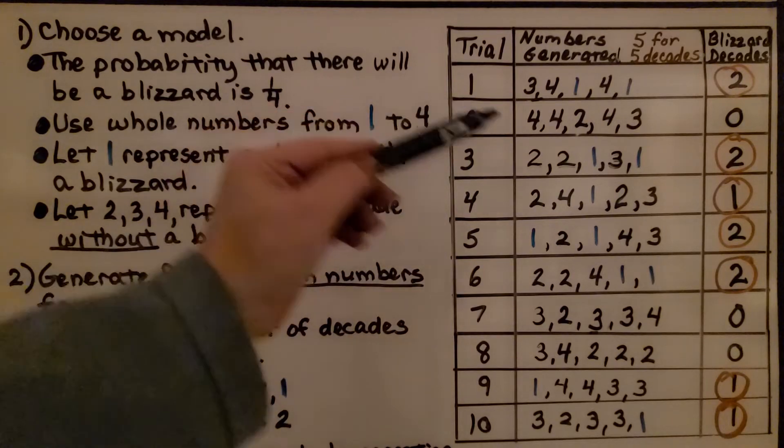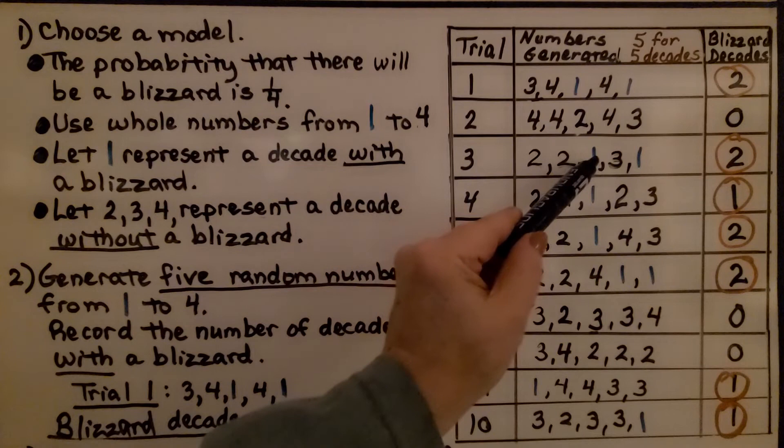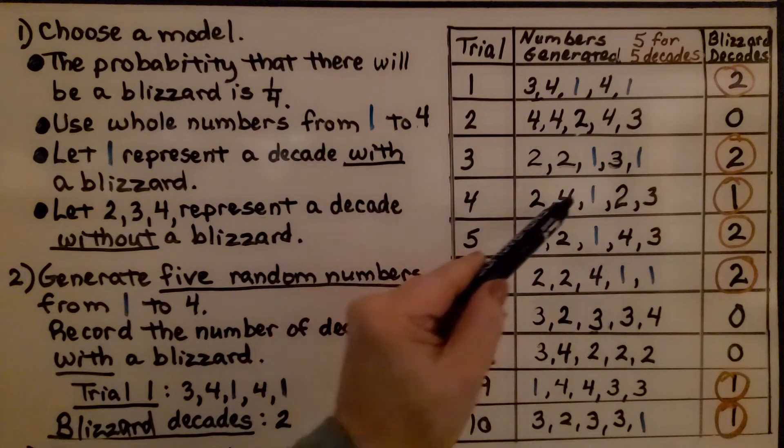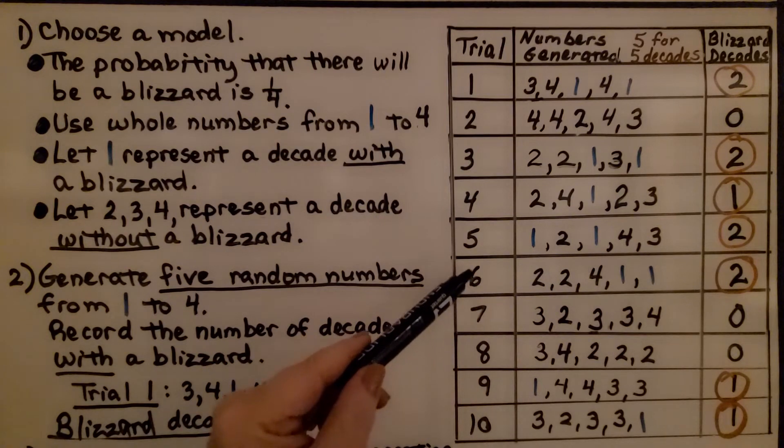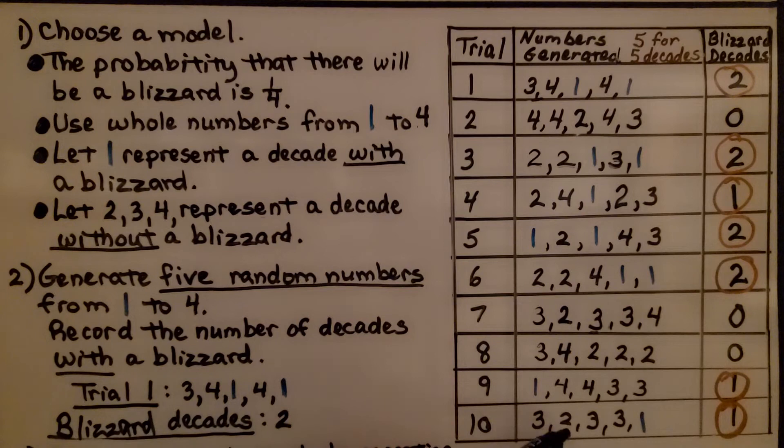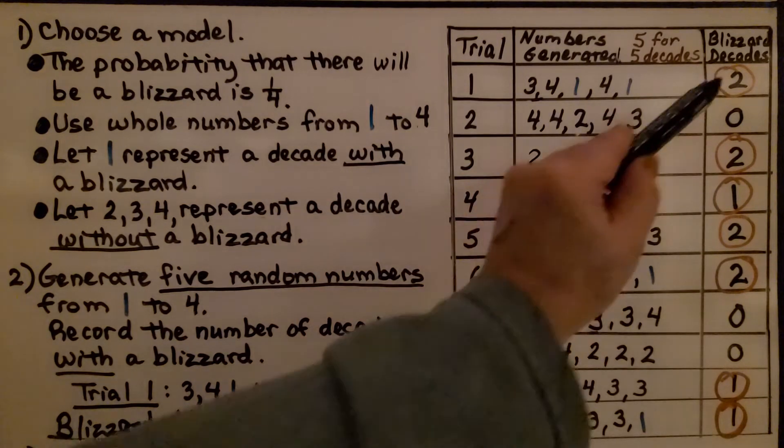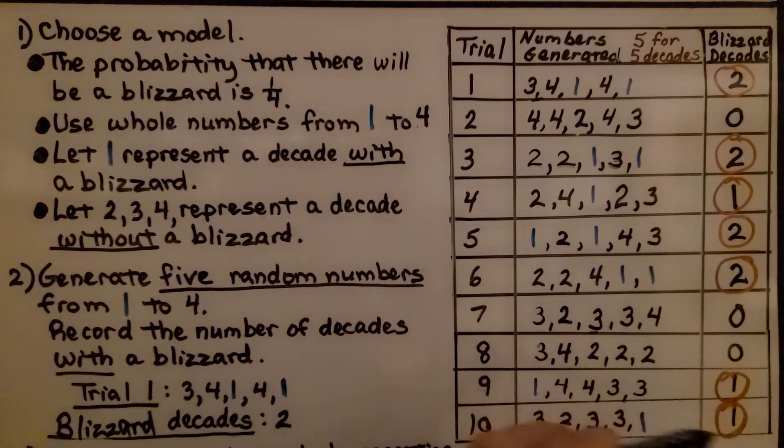For my second trial, I didn't get any ones, so I put a zero. For the third trial, I got two. For the fourth trial, I got one. For the fifth trial, I got two. For the sixth, I got two. Then I got zero, zero, one and one. And there are seven out of the ten trials that had blizzard decades.